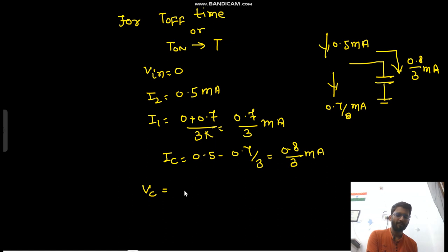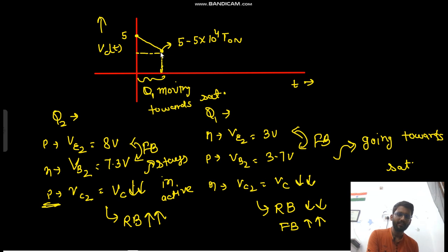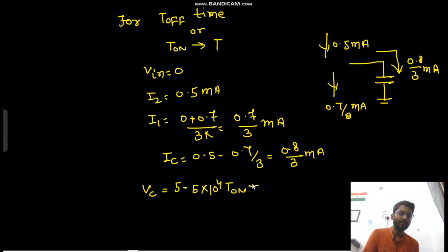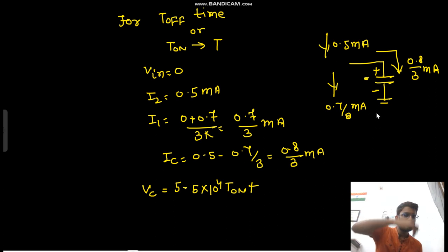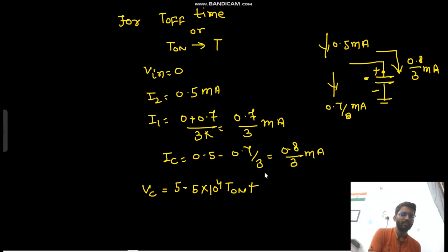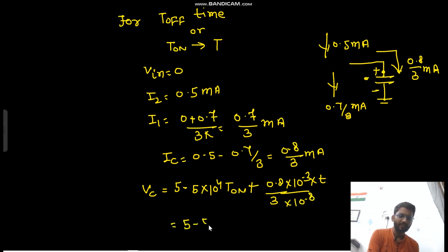So VC would now increase. The voltage already present is 5 − 5 × 10⁴ × T_on. Now voltage will increase because the current is going into the positive plate of the capacitor. The increase is IT/C = (0.8/3) × 10⁻³ × T / (10⁻⁸), which equals (8/3) × 10⁴ × T. So VC(t) = 5 − 5 × 10⁴ × T_on + (8/3) × 10⁴ × T.